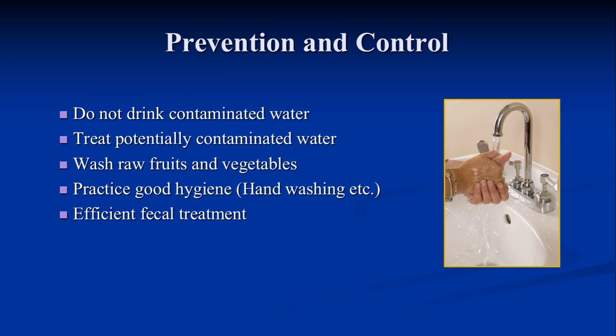Prevention and control: since it is an oro-fecal disease, we need to manage things that lead to contamination of food and water. We should not drink contaminated water; if water is contaminated, treat it properly through filtration, chlorination, or advanced filters. Raw fruits and vegetables should be washed properly to remove any cysts or trophozoites. Practice good hygiene including hand washing, and ensure efficient sewage treatment through sewage treatment plants so that stool does not mix with regular food supplies.